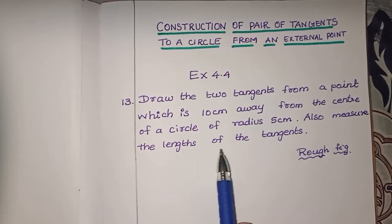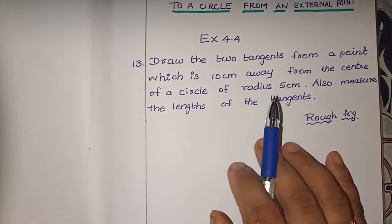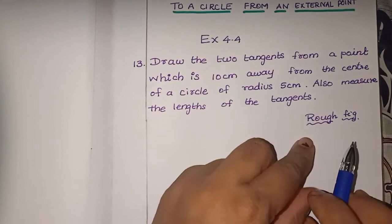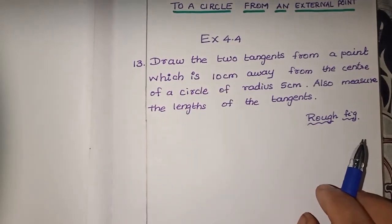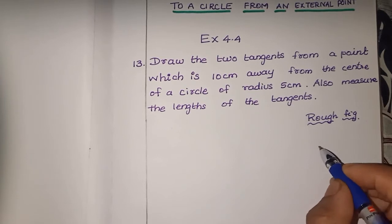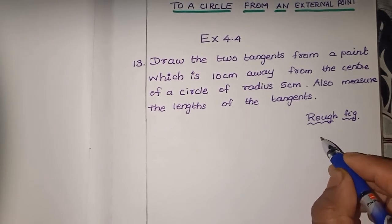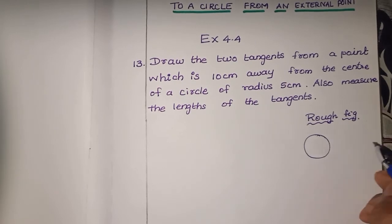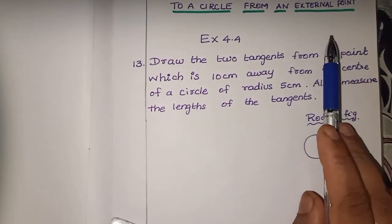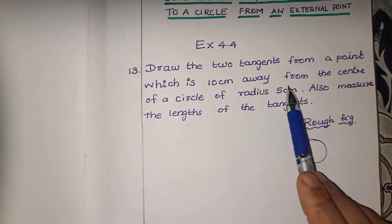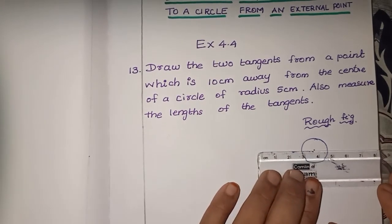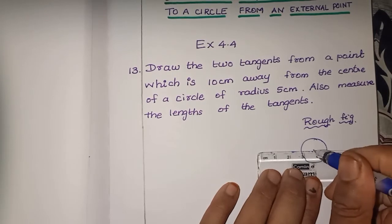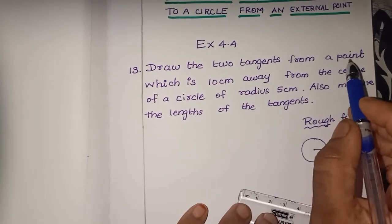First, we need to do a rough figure to understand what we need to do. Draw the two tangents from a point which is 10 cm away from the center of the circle. First, draw a circle with radius 5 cm. The external point is 10 cm from the center. So, from a point which is 10 cm away from the center of the circle, that is the external point P.